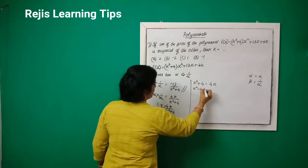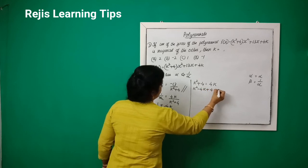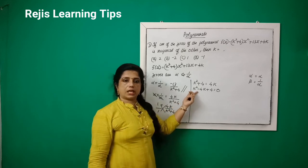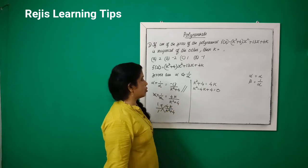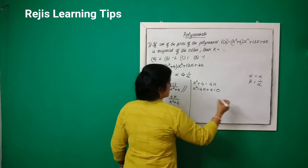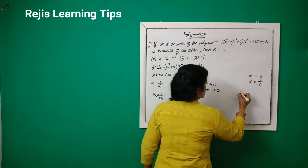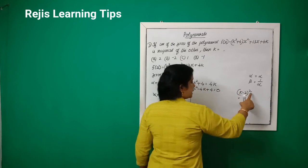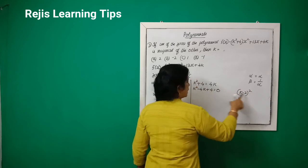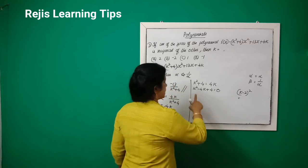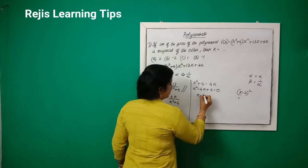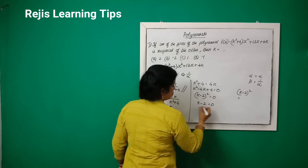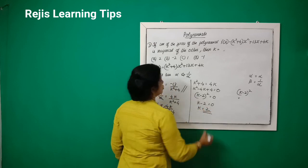Rearranging: k² - 4k + 4 = 0. This is of the form (a - b)² — specifically (k - 2)², since k² - 2(2)k + 4 = 0. So (k - 2)² = 0, which means k - 2 = 0, therefore k = 2.